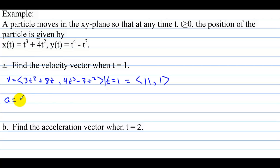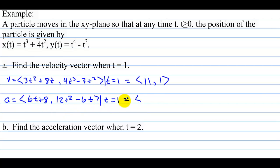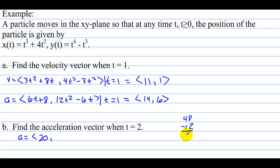The acceleration vector is the derivative of velocity: ⟨6t + 8, 12t² − 6t⟩. Evaluating at t = 1: 6 + 8 = 14 and 12 − 6 = 6, so the acceleration vector at t = 1 is ⟨14, 6⟩. Find the acceleration vector when t equals 2. Plugging in: 12 + 8 = 20, and 12 × 4 − 12 = 36, giving acceleration vector ⟨20, 36⟩.